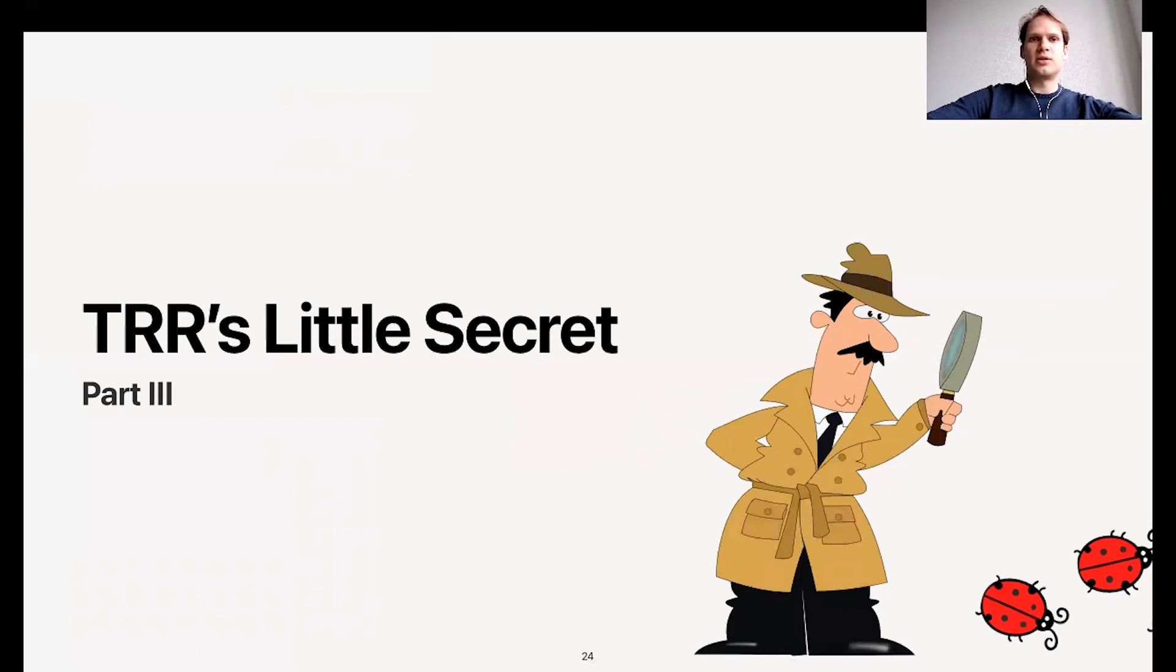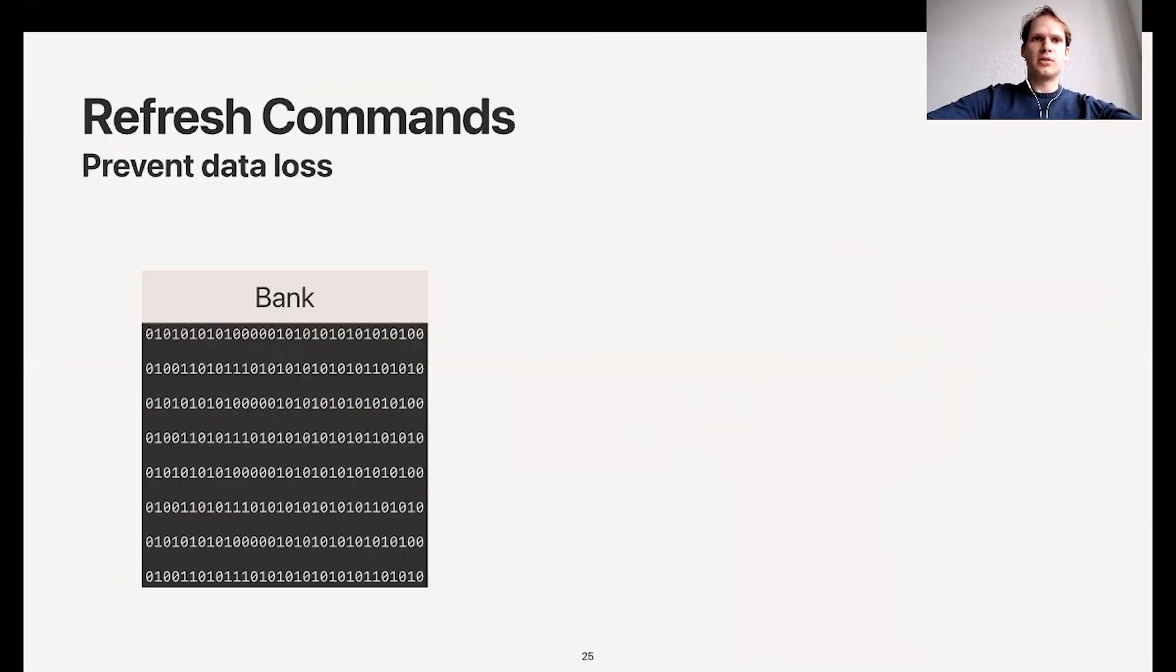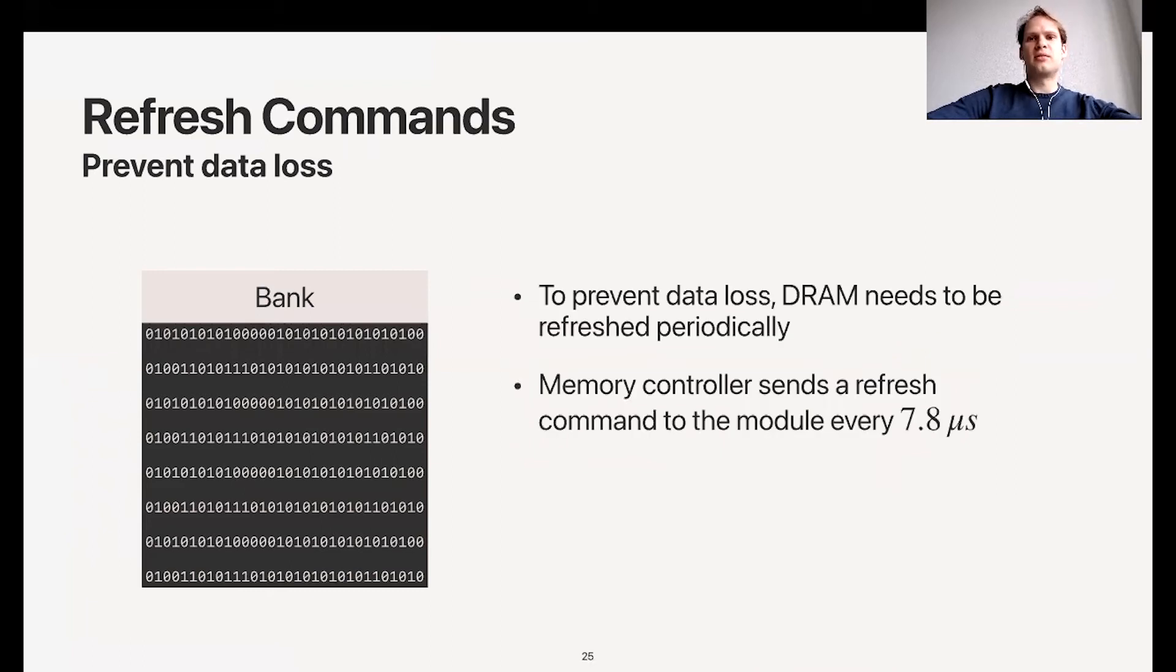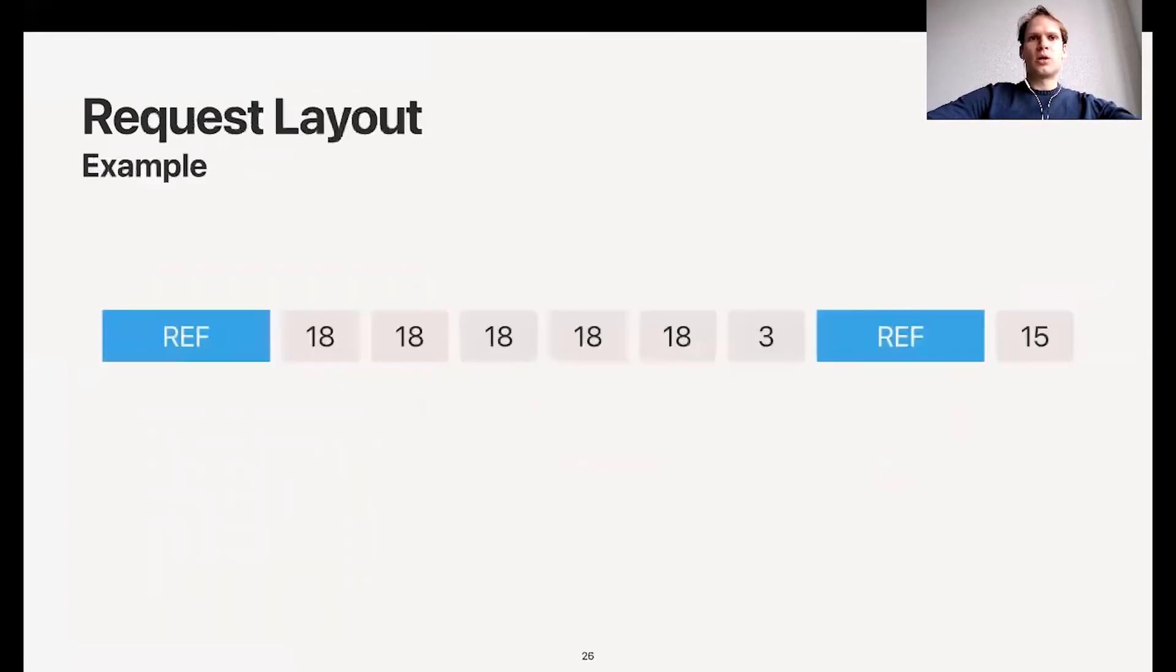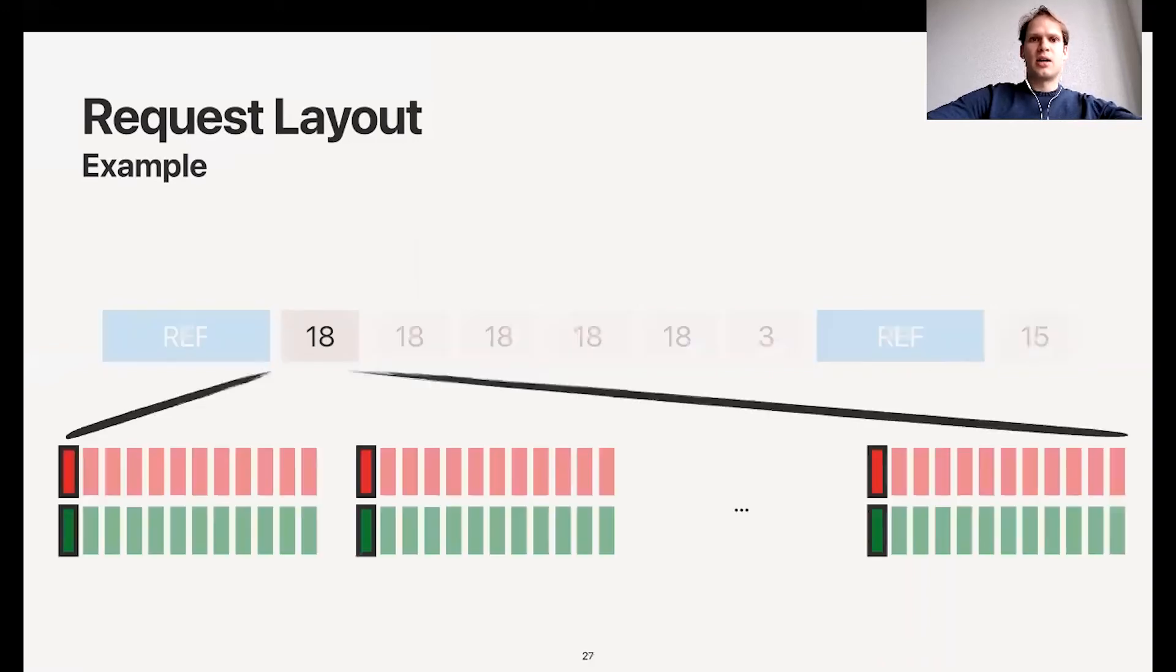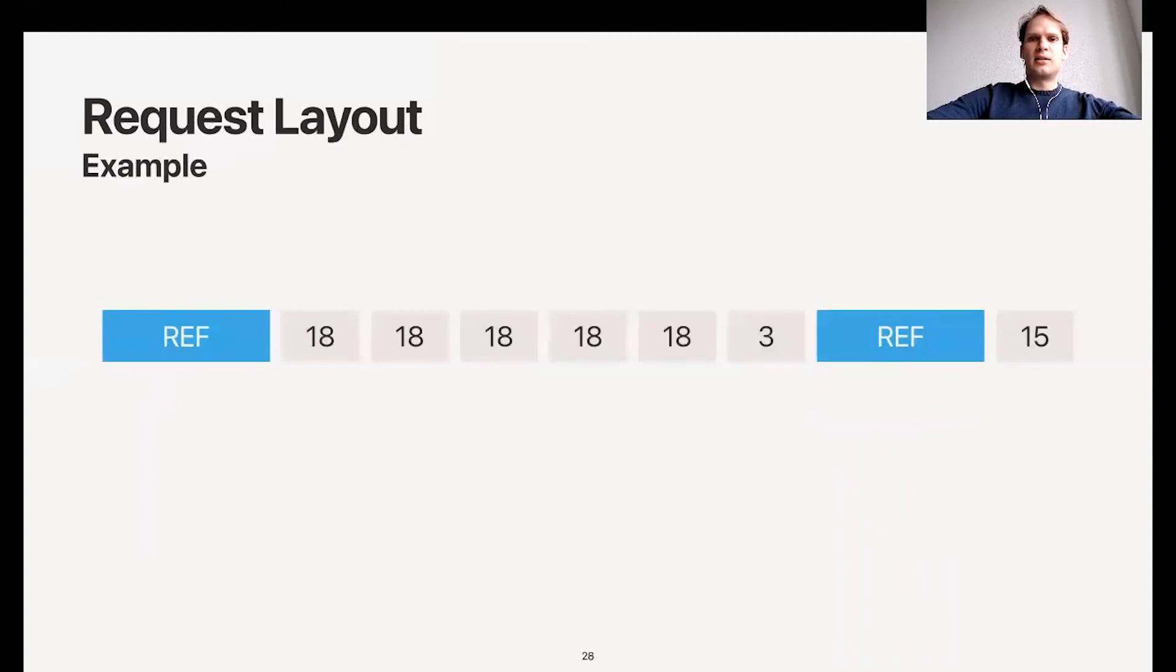To explain why, I need to say something about TRR's little secret. First, something about refresh commands. To prevent data loss, DRAM needs to be refreshed periodically - every row needs to be refreshed periodically. To do so, the memory controller sends these refresh commands to the memory module. The memory controller also sends normal read and write commands, but then every now and then it will also send a refresh command. What does a request layout timeline look like? In this example I'm using 18-sided, so 18 means nine double-sided pairs. As you can see, this pattern is asynchronous because on the right hand side the refresh command is splitting our pattern. We do three accesses, then the refresh command comes, and then the 15 other addresses come.